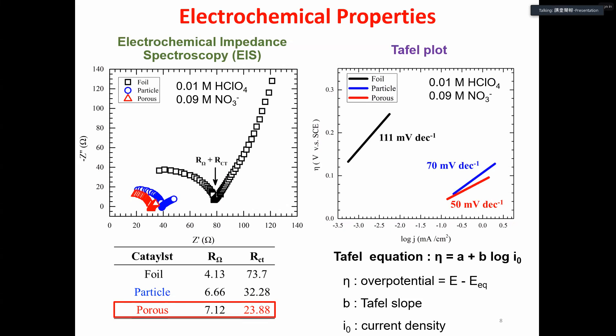This argument can be supported by the Tafel plot shown in the right figure. We can see that the copper porous catalyst has the lower Tafel slope, indicating that the overpotential for nitrate reduction is lower in copper porous structure.